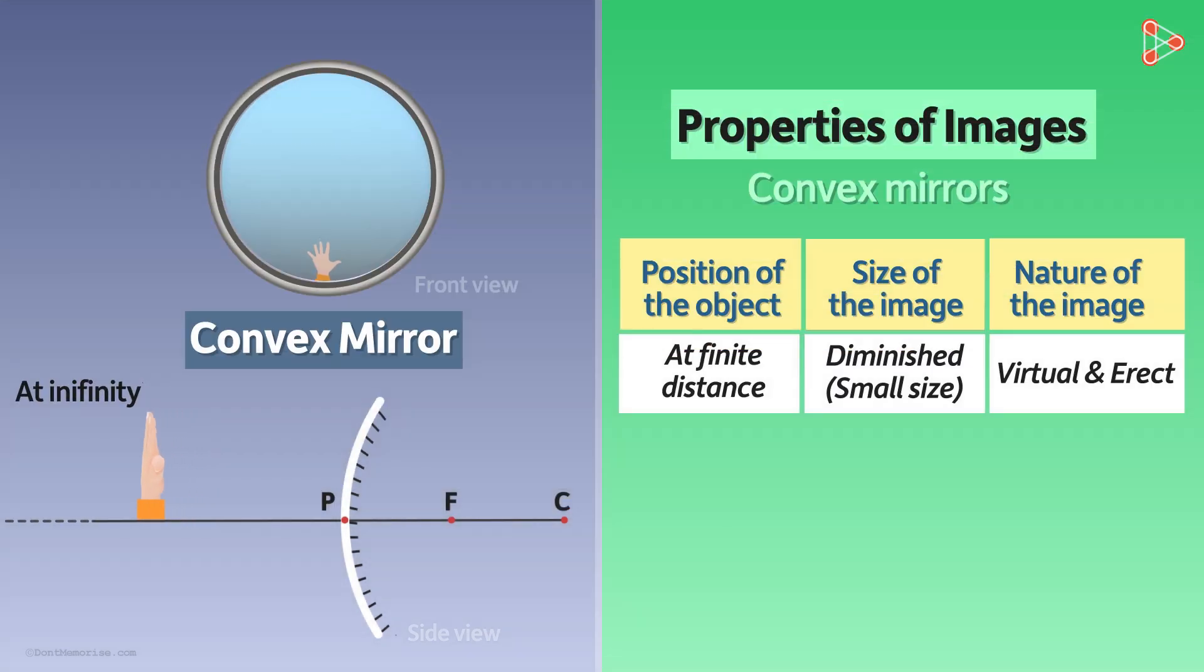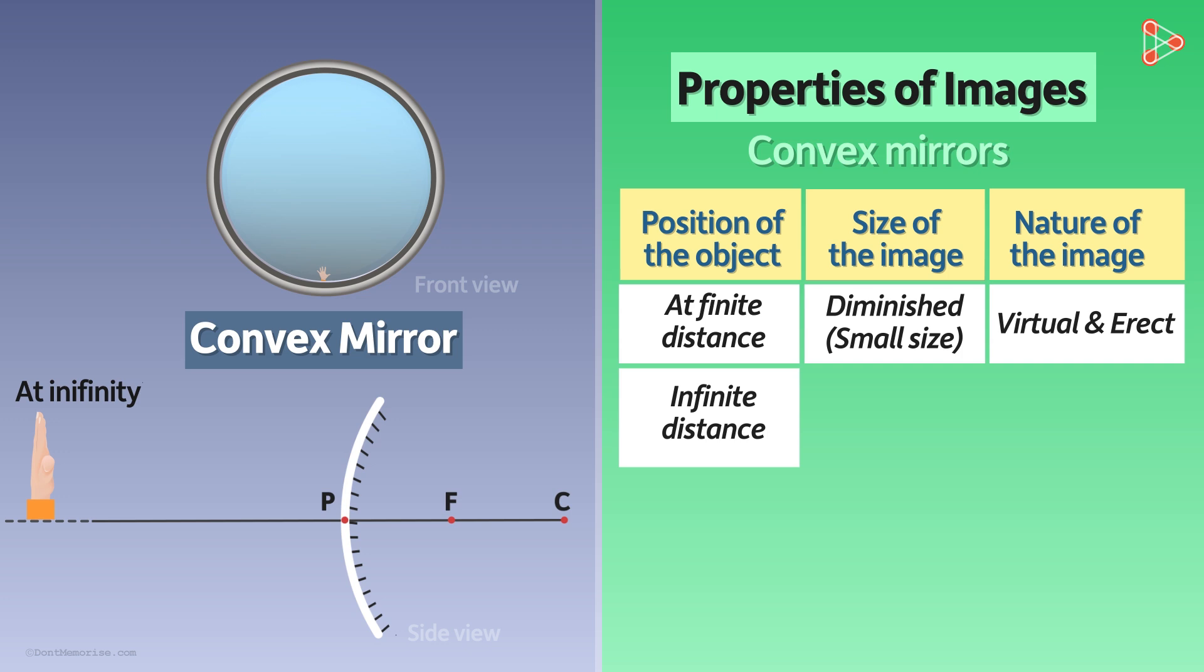Here too, the same thing happens. Image formed is indeed point-sized. But here, the image is a virtual image. So when the object is kept at infinity, the image formed is virtual, point-sized and highly diminished.